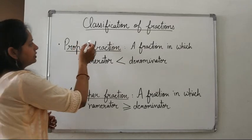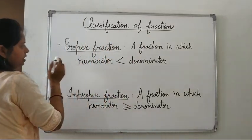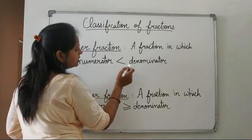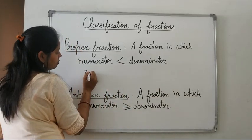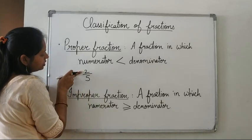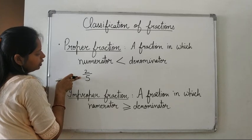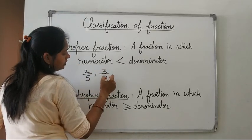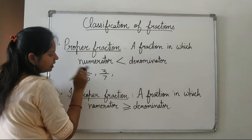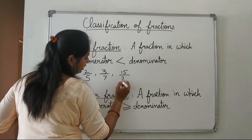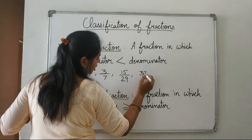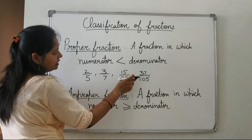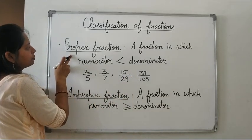Now comes the classification of fractions. The first type is the proper fraction — a fraction in which the numerator is less than the denominator. For example, 2 upon 5: here 2 is the numerator and 5 is the denominator, and 2 is less than 5. Other examples are 3 upon 7, 15 upon 29, and 37 upon 105. Any fraction where the numerator is less than the denominator is a proper fraction.